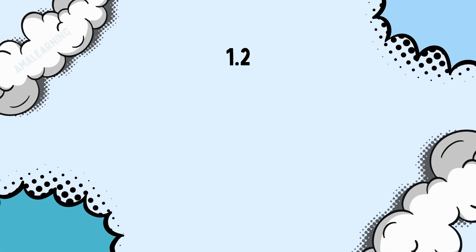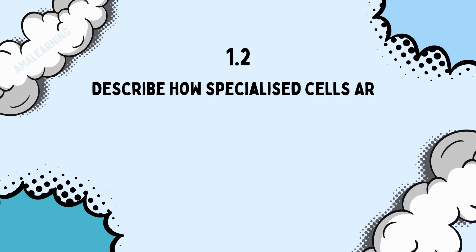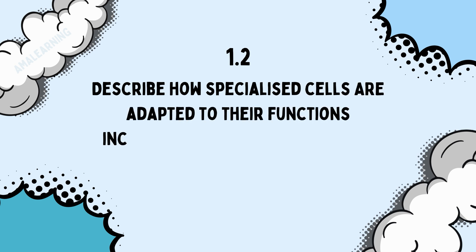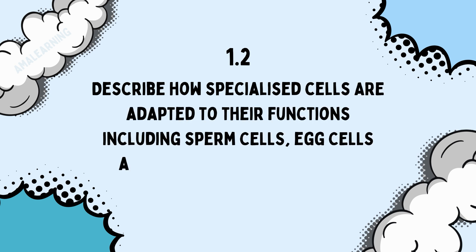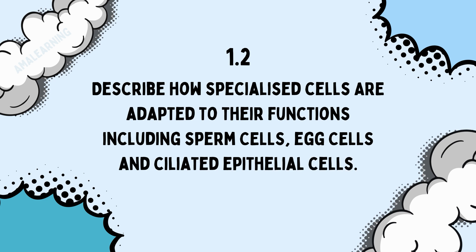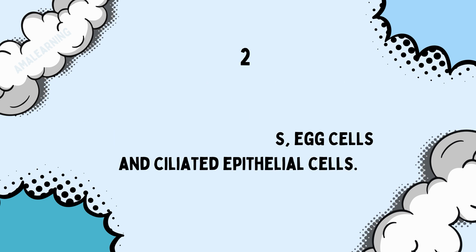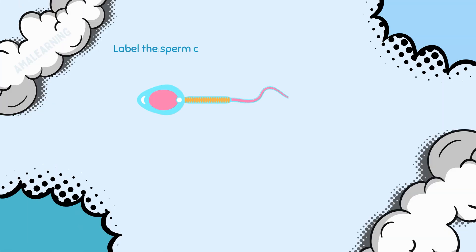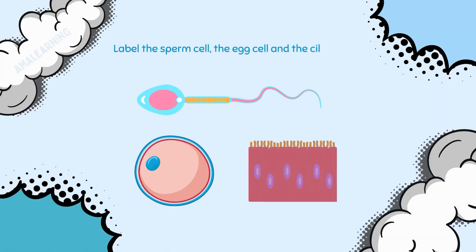Specification point 1.2: describe how specialised cells are adapted to their function, including sperm cells, egg cells, and ciliated epithelial cells. To successfully answer any GCSE question linked to this specification point, you will need to be able to label the sperm cell, the egg cell, and the ciliated epithelial cell, and describe how each of these cells is adapted to fulfil its function.